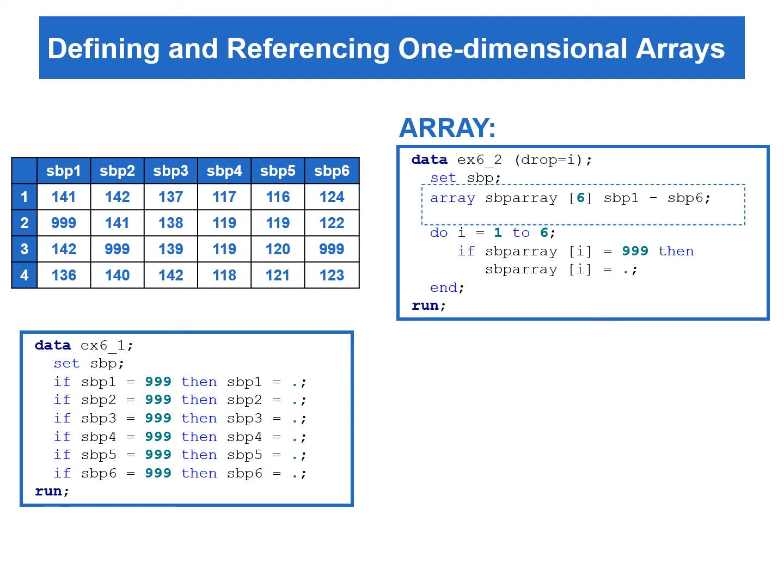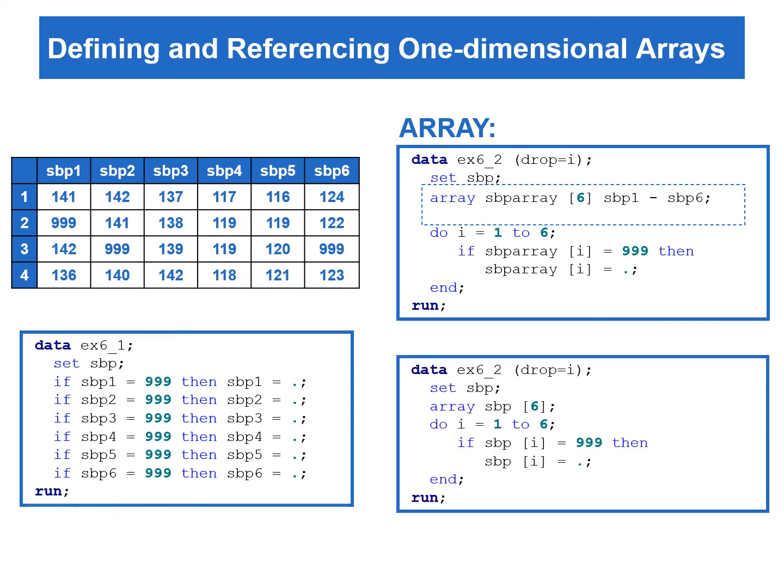Instead of listing SBP1 to SBP6 individually, we can use the shorthand notation by inserting a dash between SBP1 and SBP6. We can also omit the array elements in the array statement, since SBP1 to SBP6 variables existed in the data step.